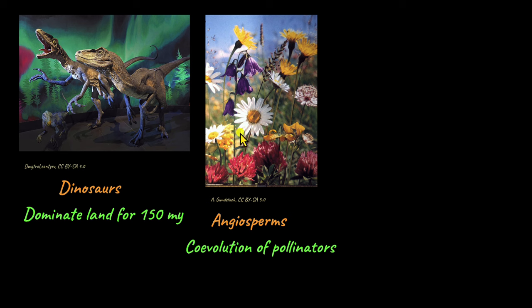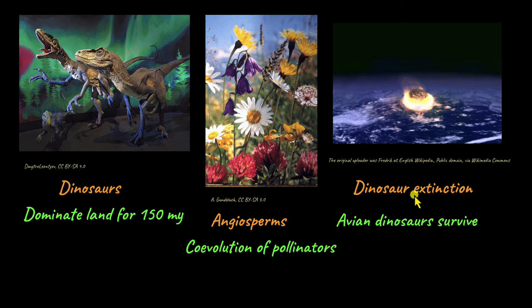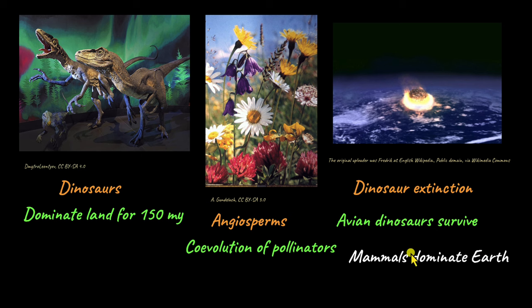After dominating the land for about 150 million years, scientists believe a huge asteroid strike caused the extinction of almost all dinosaur species. Only the avian dinosaurs — those that could fly — probably survived the asteroid impact. This strike caused huge environmental changes that led to the extinction of all non-avian dinosaurs. Because the dinosaurs went extinct, mammals began to dominate the Earth, and from the avian dinosaurs, birds began to evolve. Birds can actually be thought of as long-lost descendants of dinosaurs.